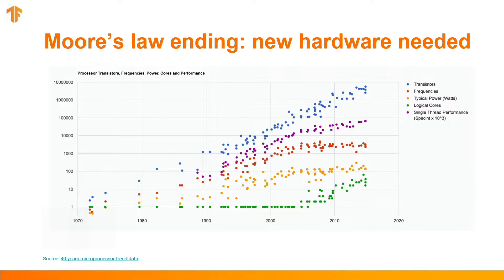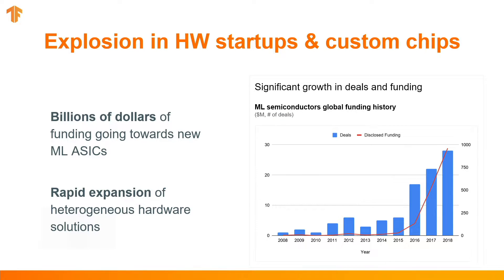And how do we build hardware which makes that possible? For those familiar with hardware details, Moore's law is ending — this is also the end of Dennard scaling. We cannot simply say the next CPU is going to run at higher frequency. And because of that, what is happening in the industry is the explosion of custom hardware.